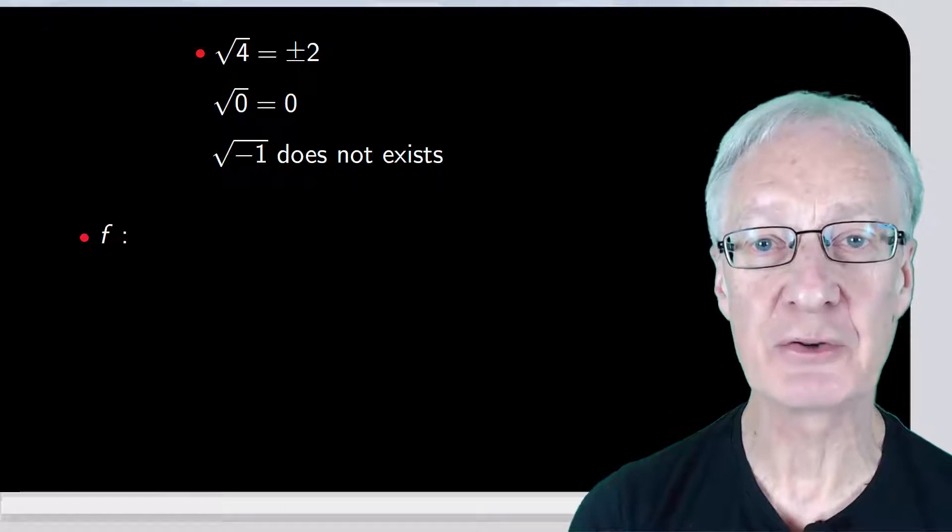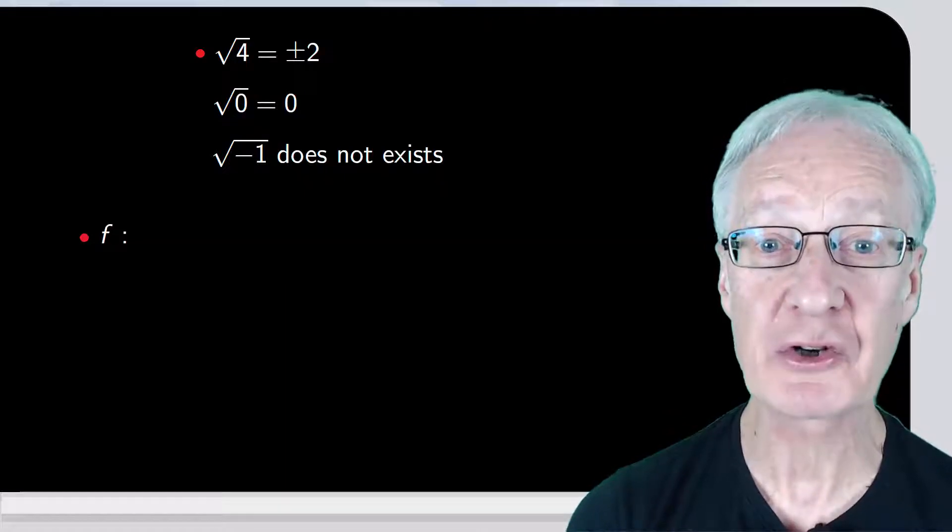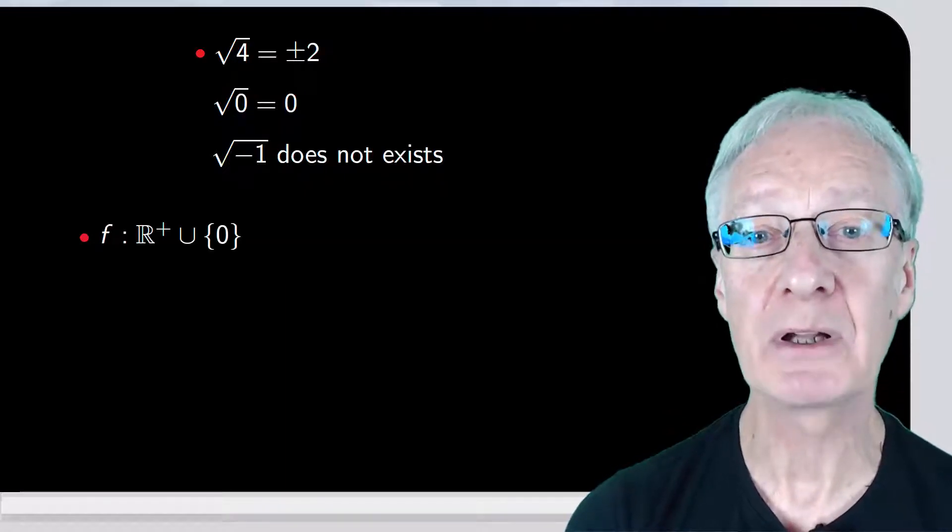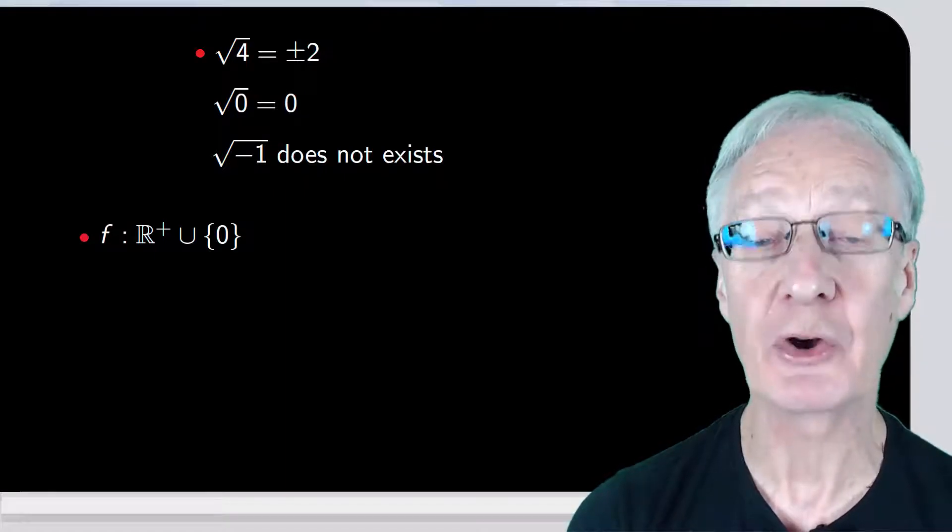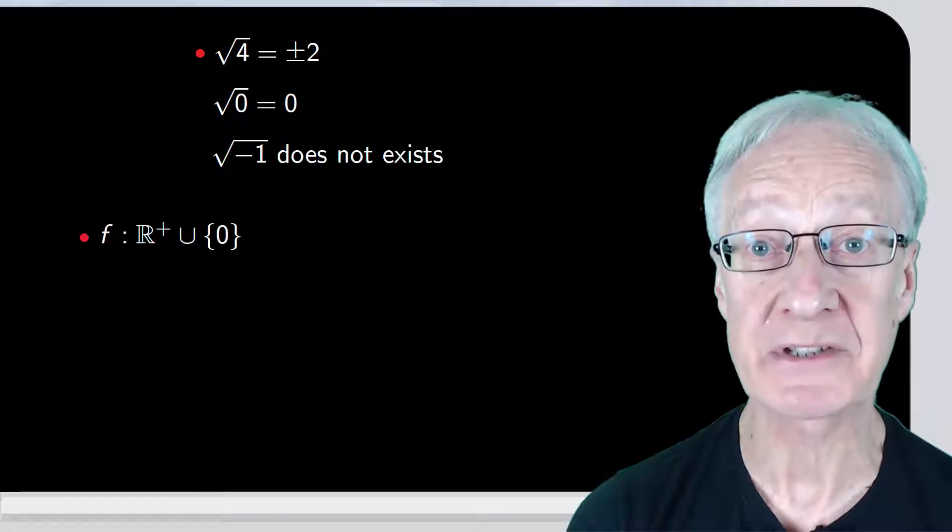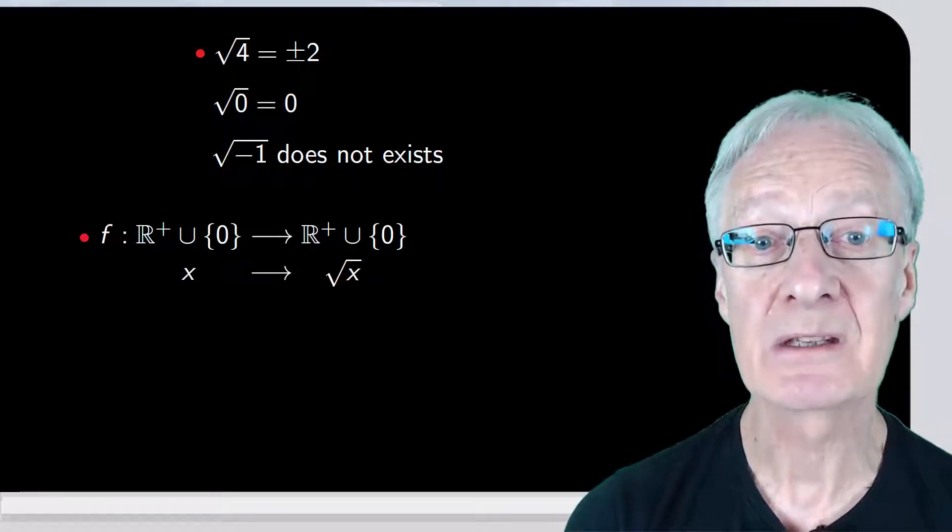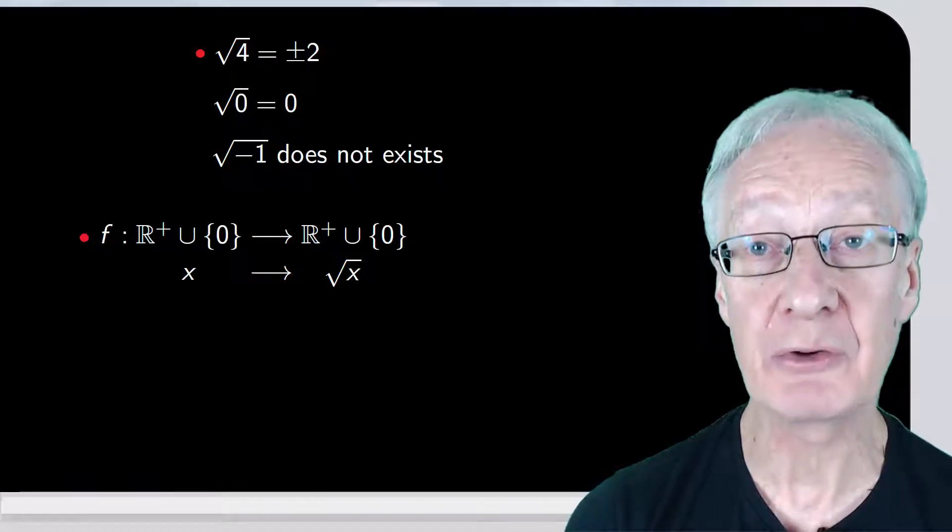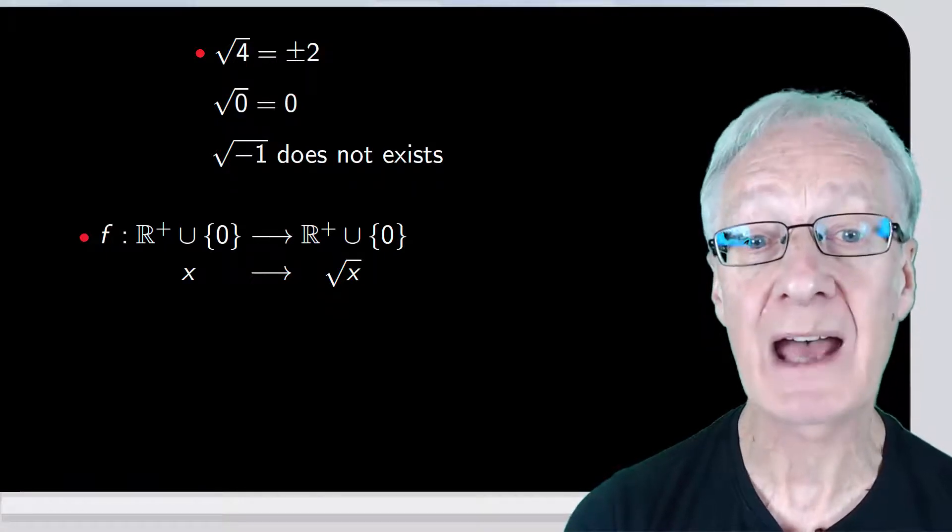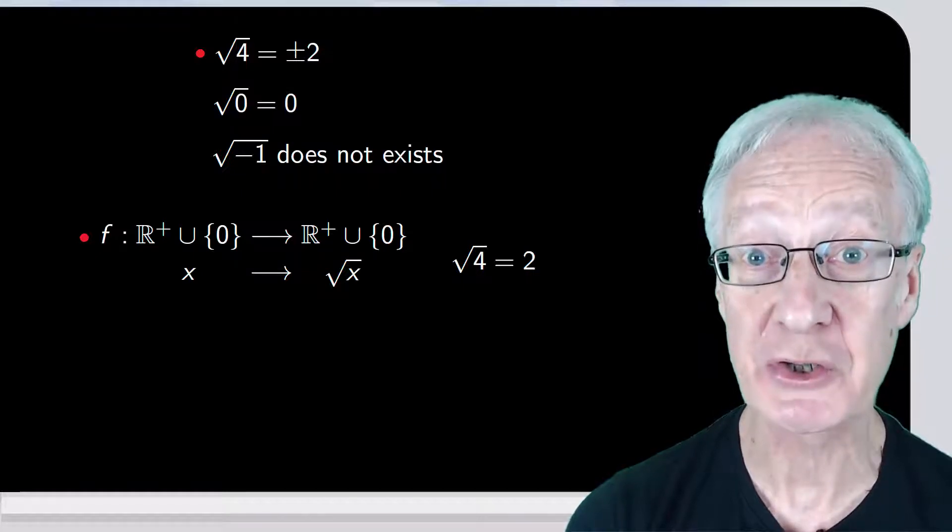The first thing is to restrict the square root function to r plus union 0. And for positive numbers, only the positive square root is considered. So, with this convention, and regarding the square root as a function, we have that the square root of 4 is just 2.